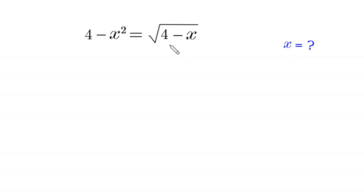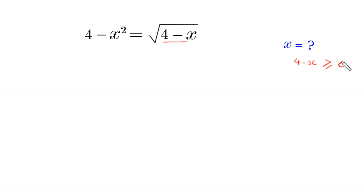Since this expression 4 minus x is under square root, 4 minus x must be greater than or equal to 0. If we move this negative x to the right hand side, then 4 must be greater than or equal to x. It means x must be less than or equal to 4.